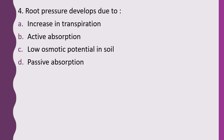Question 4. Root pressure develops due to: increase in transpiration, active absorption, low osmotic potential in soil, or passive absorption. The correct answer is option B, active absorption.